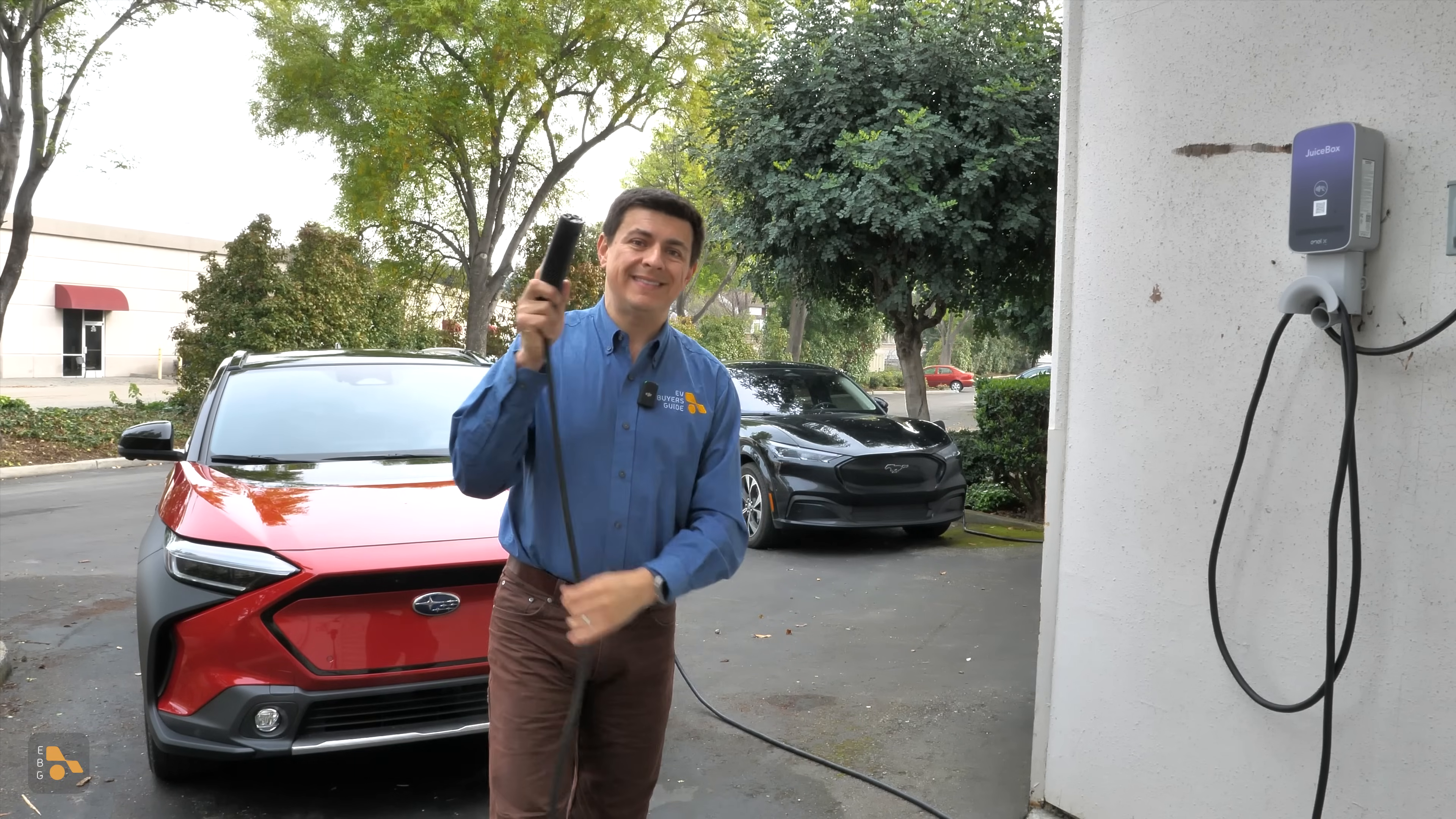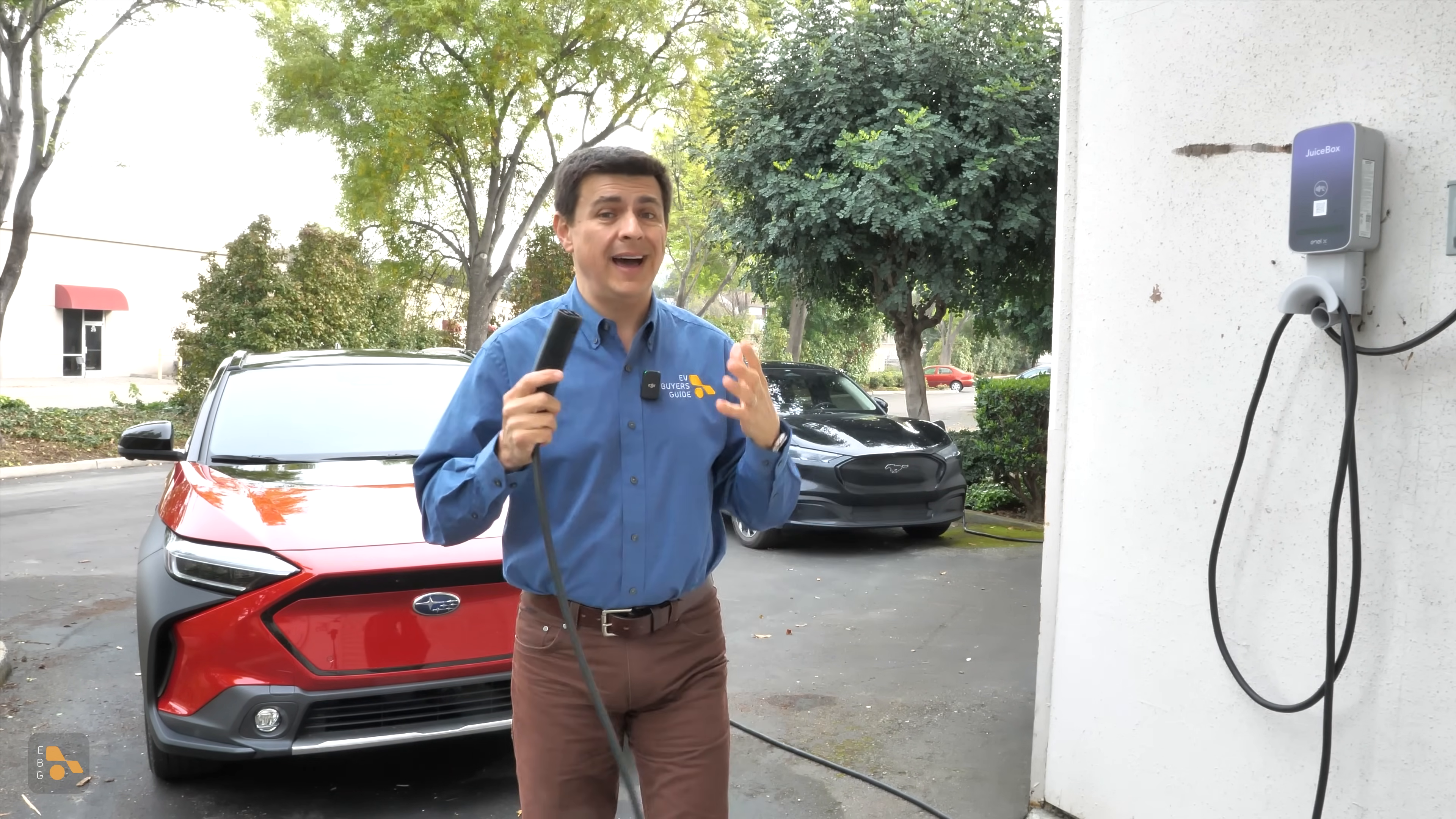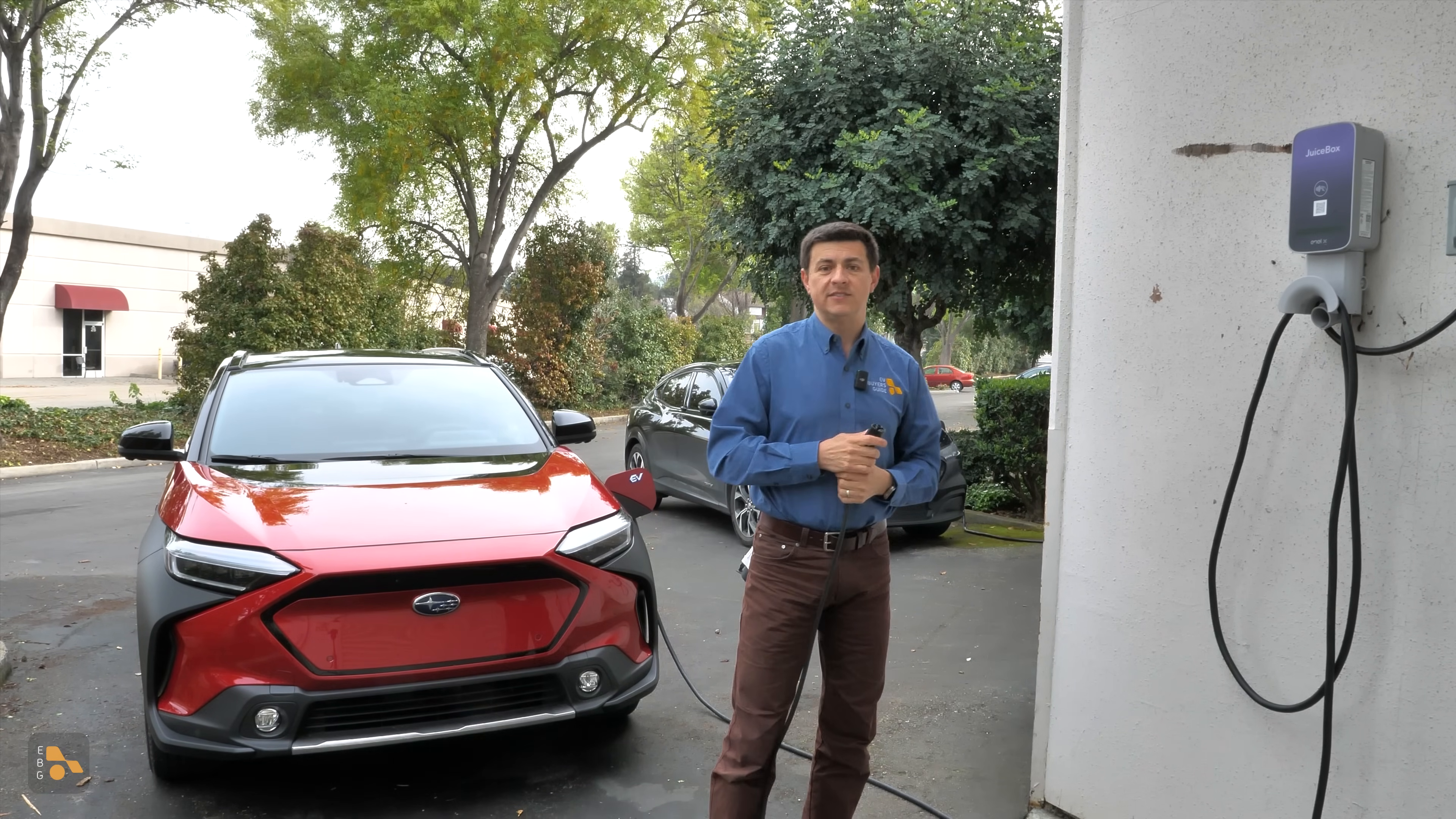But for me, the most interesting thing about the J3400 standard, now that it is officially done, and most car companies have said they are signed up for that J3400 standard, is not the quick DC fast charging or its interoperability. It's actually this connector's ability to support 277 volt AC level 2 charging. And that means it's going to be a lot easier and less expensive for schools, small businesses, apartments, condos, etc. to support more EVSEs being installed.